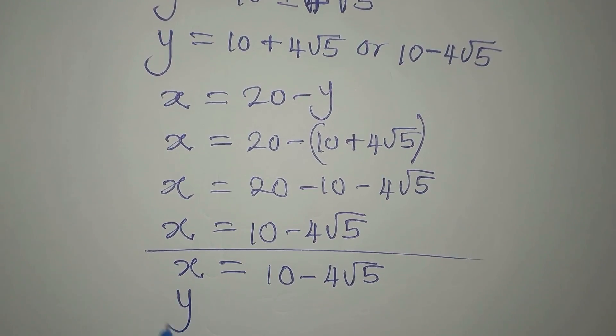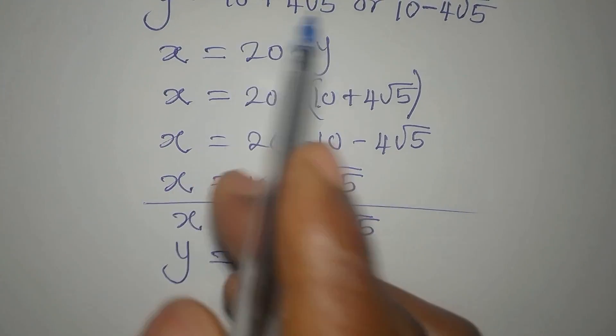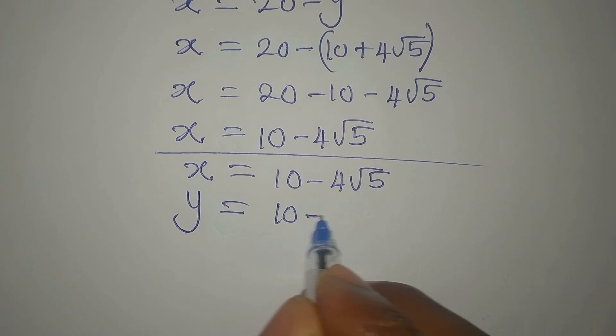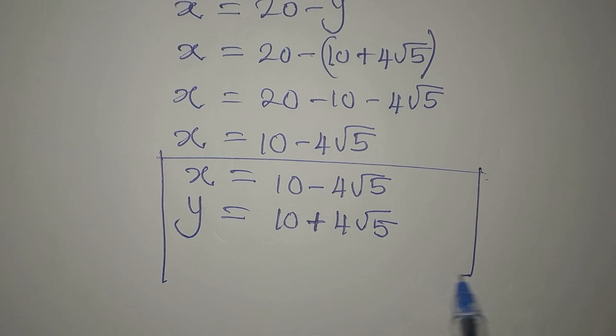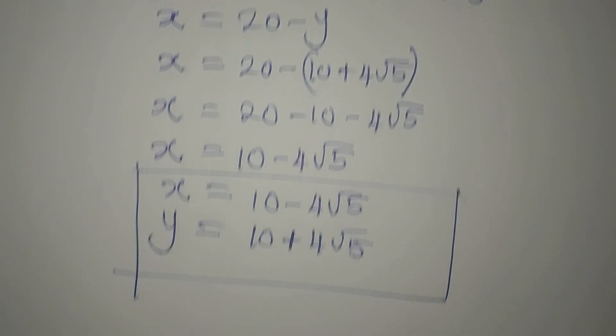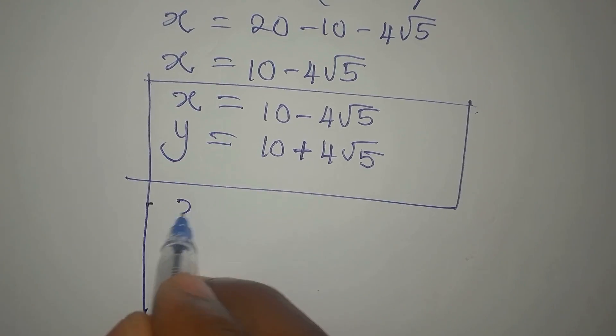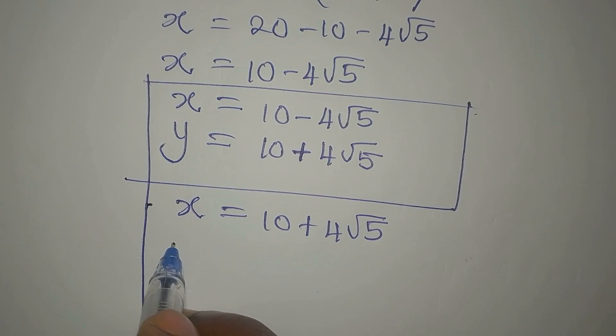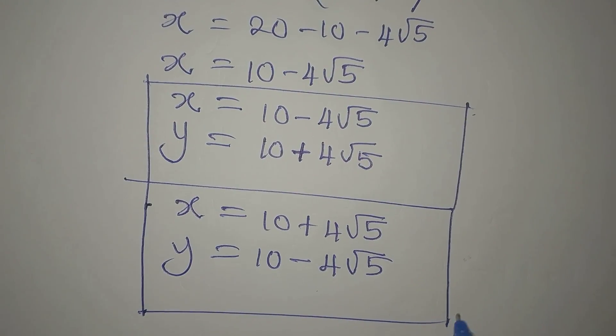We are saying that when x is equal to 10 - 4√5, y is equal to 10 + 4√5. And then if you go to the other solution, remember we had another value of y which is 10 - 4√5. So we can conclude that when x becomes 10 + 4√5, y will now be 10 - 4√5. If you get this, you have solved everything into detail.